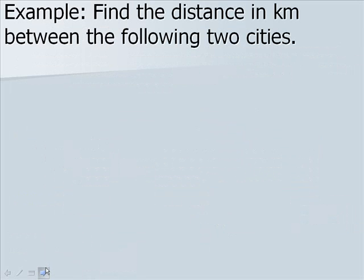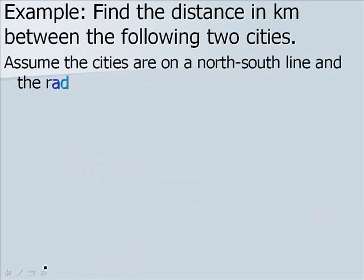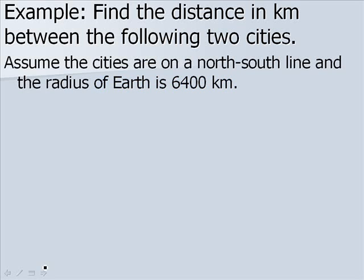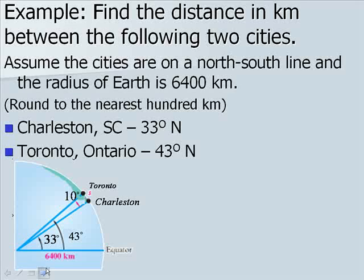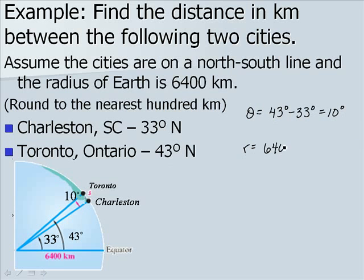Now let's find the distance in kilometers between the following two cities. We want to assume the cities are on a north-south line, and the radius of Earth is 6,400 kilometers. We'll round our answer to the nearest 100 kilometers. Our first city is Charleston, South Carolina, at 33 degrees north, and our second one is Toronto, Ontario, at 43 degrees north. Here's a picture of what we're talking about. We want to find our arc length between the two cities, so to find the angle, we need to subtract them. So theta is going to be 43 degrees minus 33 degrees, or 10 degrees. And remember that r was 6,400 kilometers.